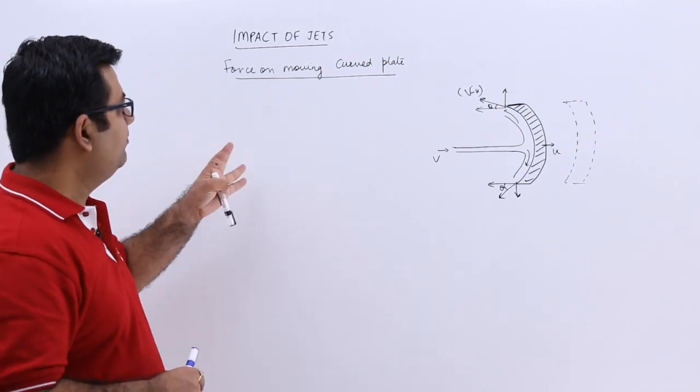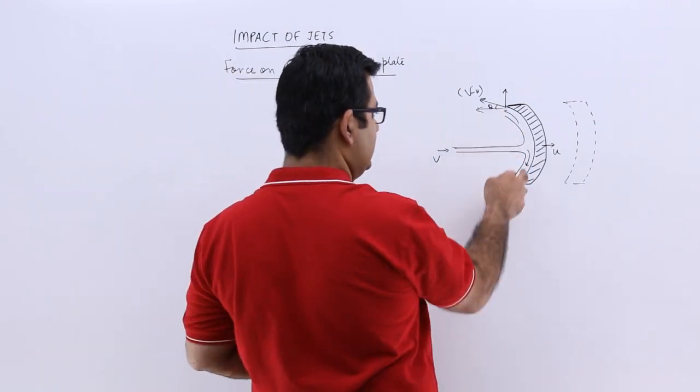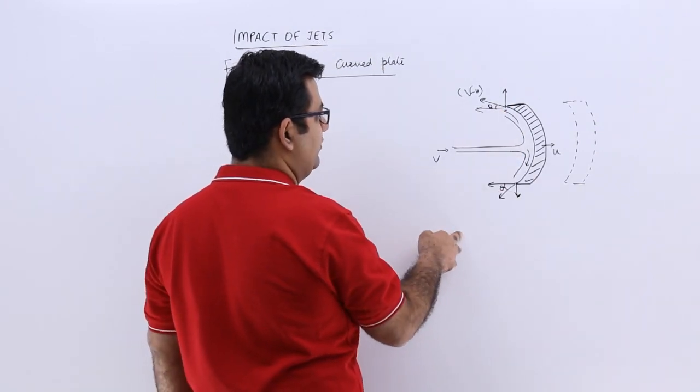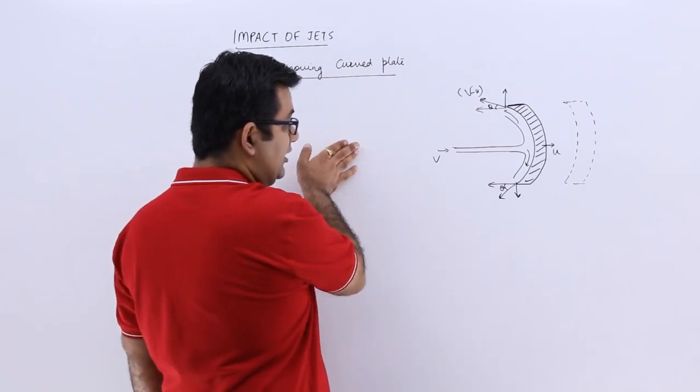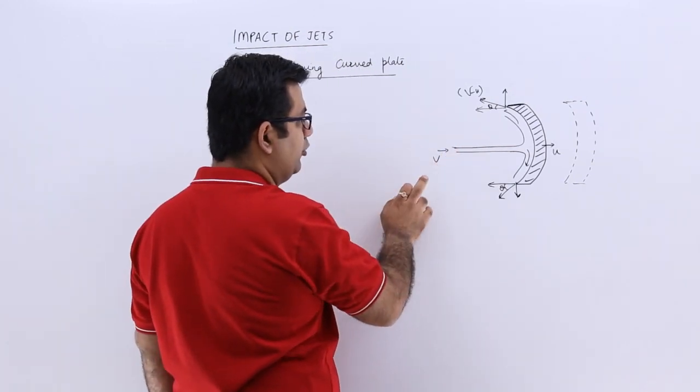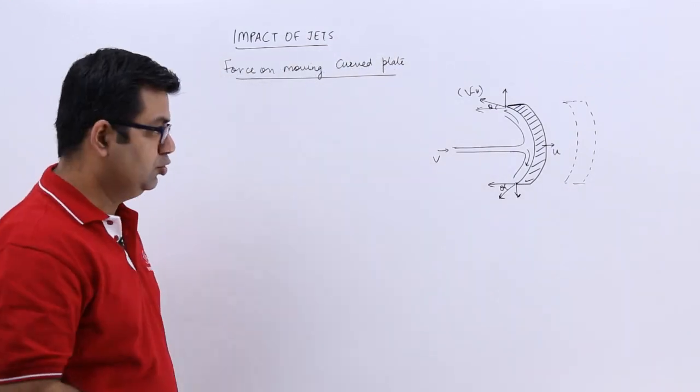Now let's talk about a curved plate which is moving in the direction of the jet. So this is a curved plate and it is symmetrical, that is the angle at the exit are same. The jet is striking it at a velocity of v and the plate is moving in that direction at a velocity of u.